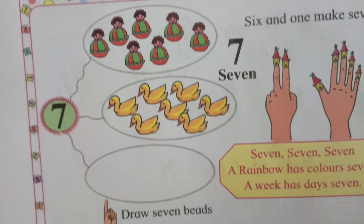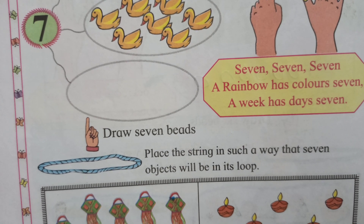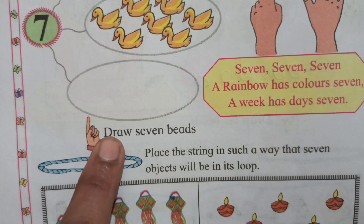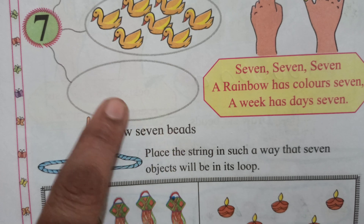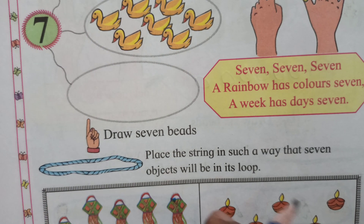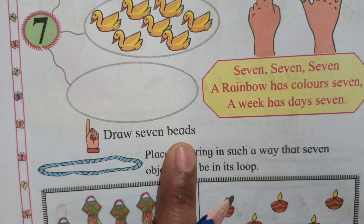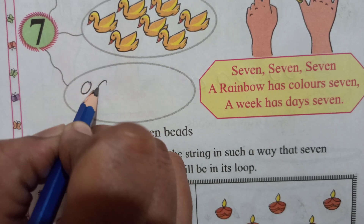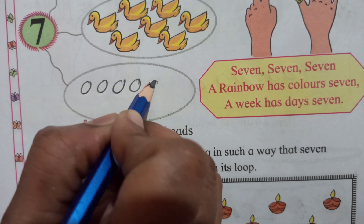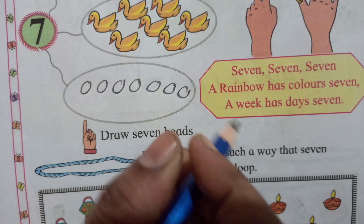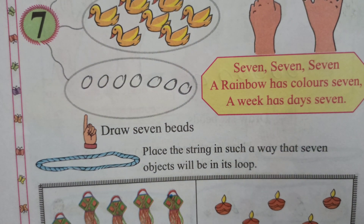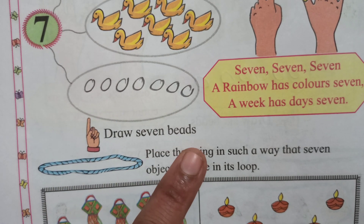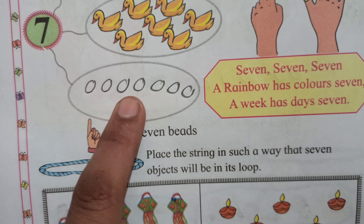Then let's start. Take out your pencil. The finger is telling us to draw 7 beads — B-E-A-D-S, beads. Count and draw: 1, 2, 3, 4, 5, 6 and 7. Draw fast. 7 beads.